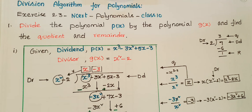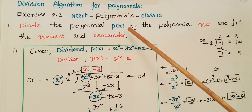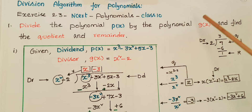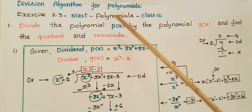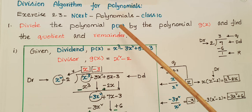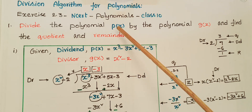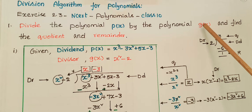Hello everyone, today I am going to tell the solution of the first problem from Exercise 2.3 from NCERT, from the Polynomials chapter, Class 10. We have to divide the polynomial p(x) by the polynomial g(x) and find the quotient and remainder.